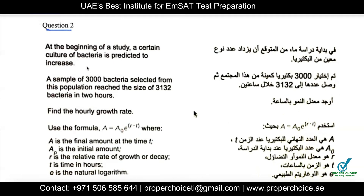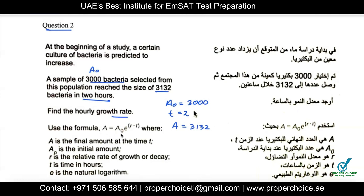Question two: at the beginning of a study, a sample of 3000 bacteria is selected. This population reaches 3132 bacteria in two hours. So the initial value a₀ equals 3000, and at t equals 2, a equals 3132. The question asks for the hourly growth rate using the formula a = a₀ × e^(rt), which will be provided in the MSAT data sheet. They are asking us to find the value of r.